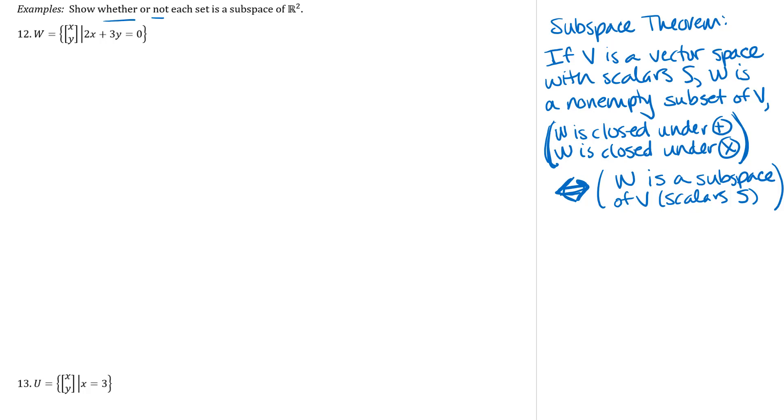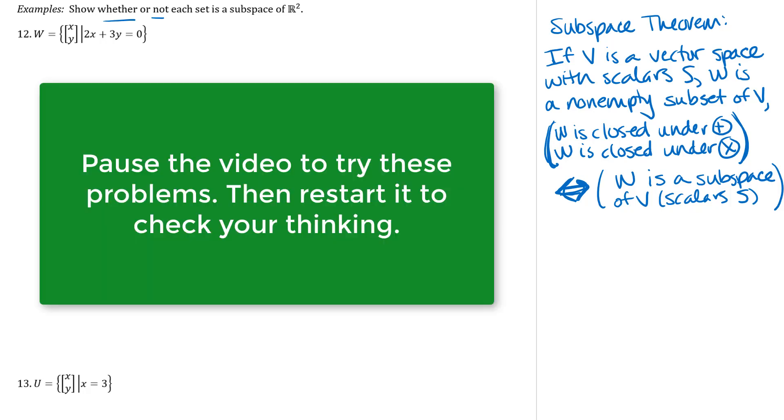And in order to use the subspace theorem anyway, I could use other theorems certainly as well, but in using the subspace theorem, I just need to show that one of those closure properties fails. And so I just need a single counterexample to show that that fails. So showing that something is a subspace, a little bit more work to write out than to show that something is not a subspace. So my advice is to pause the video and try these two problems and then restart the video to check what you've done and check your logic.